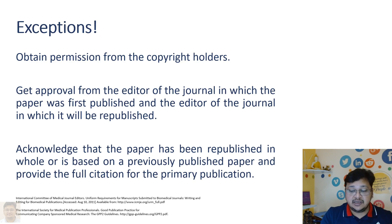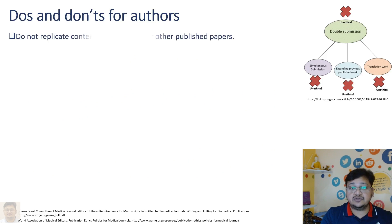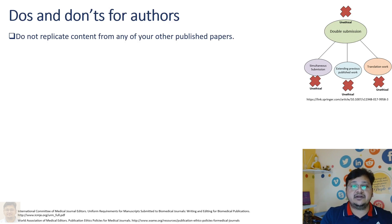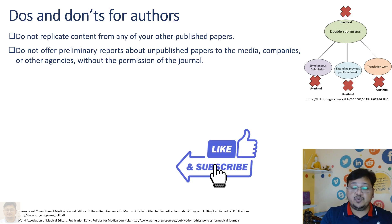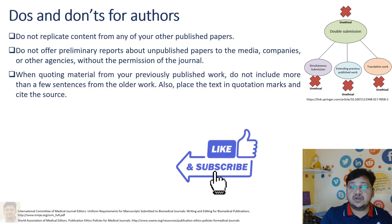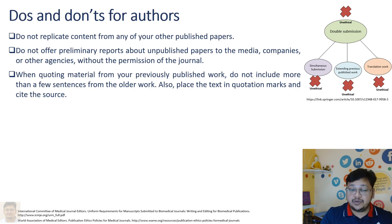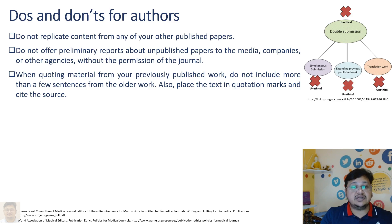Here are the do's and don'ts regarding duplicate submission and redundant publication. Do not replicate content from other published papers. Do not offer a preliminary report about unpublished work to media companies or agencies without obtaining approval from the journal. When quoting material from your previously published work, include only a few sentences, place the text in quotation marks, and cite the source. For larger portions, you must obtain approval from the concerned journal or publisher.